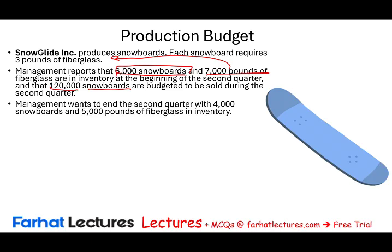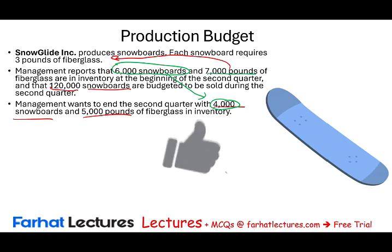Management wants to end the second quarter with 4,000 snowboards and 5,000 pounds of fiberglass in inventory. Just like at the beginning of the quarter we had 6,000 snowboards and 7,000 pounds of fiberglass in inventory, at the end of the second quarter management wants 4,000 snowboards and only 5,000 pounds of fiberglass. This could suggest that in the third quarter they expect fewer sales — that's one possible explanation — or they're getting better at forecasting their sales.